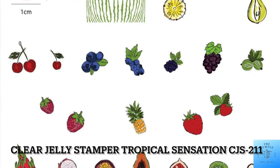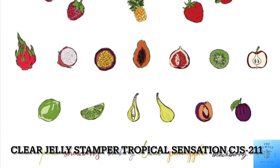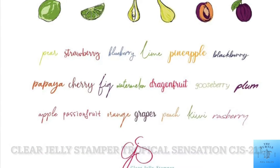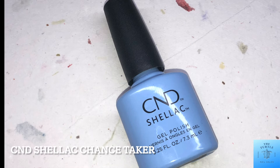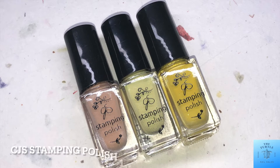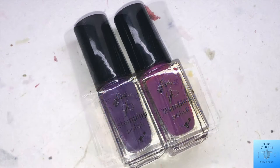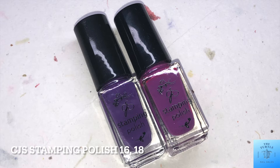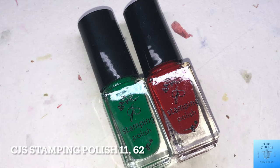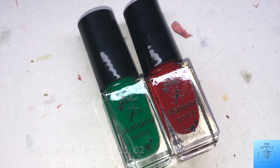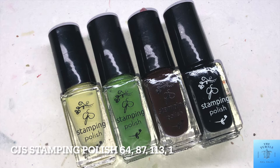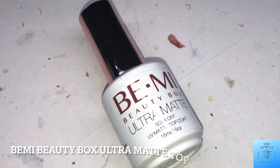Today I am doing some fruit cocktail nails featuring Clear Jelly Stamper Tropical Sensation CJS 211. For my base color I am using CND Shellac Chance Taker, and for stamping polish I am using 119, 64, 8, 16, 18, 11, 62, 64, 87, 113, and 1. For my top coat to seal in the design I'll be using my favorite Be Me Beauty Box Ultra Matte.